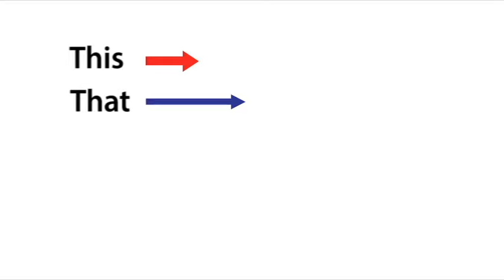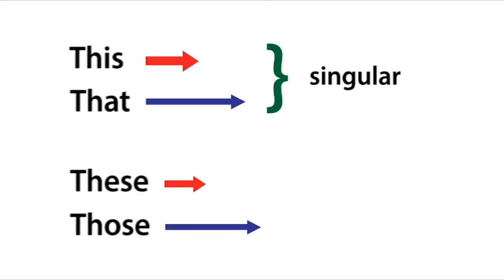The two words, this and that, talk about singular nouns. The two words, these and those, talk about plural nouns.